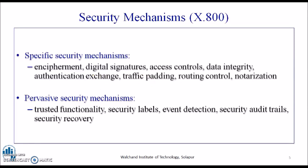First, encipherment. Encipherment is basically the use of mathematical algorithms for encrypting and decrypting the message so as to ensure confidentiality, integrity, and non-repudiation of the data. There are various encipherment processes available, and depending on the requirements, users over the network can choose the appropriate one.